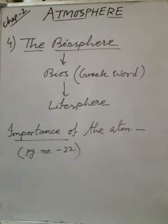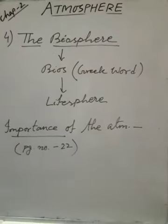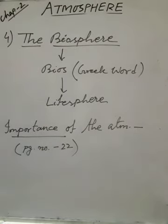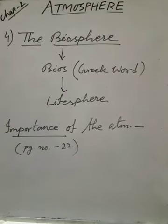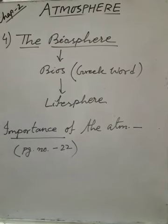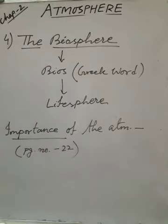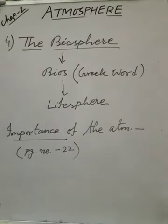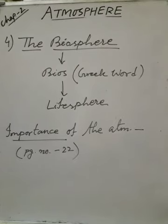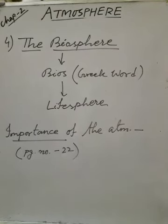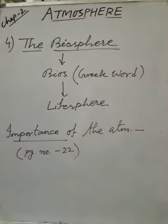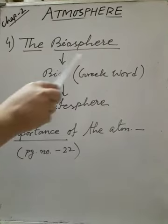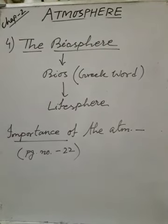Our last topic: the biosphere. Biosphere - what is the meaning? Actually, the word biosphere has derived from a Greek word 'bios', and the meaning of this word is life sphere. That is why this sphere is called the sphere of life or the layer of life. Human beings and all living organisms are coming under this layer - biosphere. This biosphere can survive on the earth's surface because of three layers: atmosphere, lithosphere, and hydrosphere. When atmosphere, lithosphere, and hydrosphere meet, the biosphere forms.